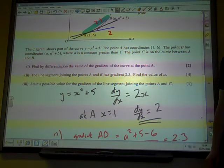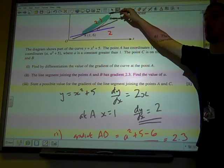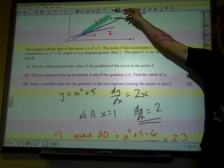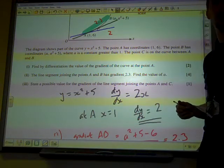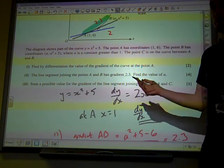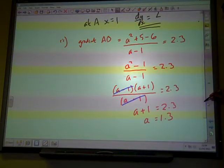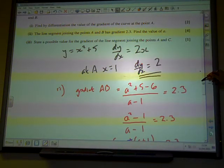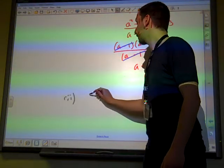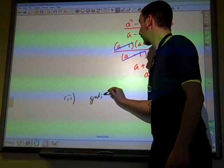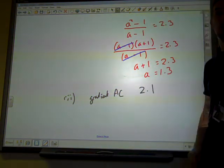It would be between the two of them. It would be closer to 2, probably, than 2.3. We just need to put in some number between 2 and 2.3. I think it would be closer to 2. Let's say 2.1 or 2.2. It just says state a possible value, so let's just pick a number.